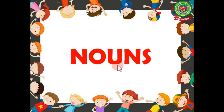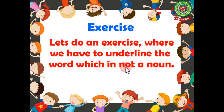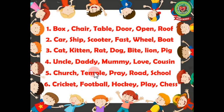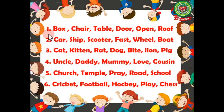Today in our English class we will be doing exercises related to the topic. Let's begin with our first exercise. In this exercise we have to underline the word which is not a noun. All the words given in this list are nouns except one. Number one: box, chair, table, door, open, roof.